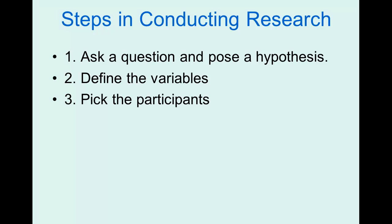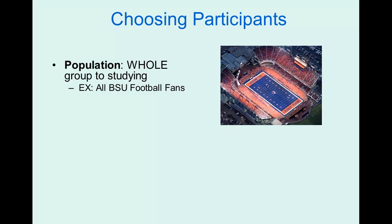Once we've defined our variables, we next need to pick the participants who are going to be in our study. Generally, a population would be ideal — a population includes the entire group of people that you're studying. So going back to my research question about BSU football fans and the blue turf, my population would be every single football fan, not just in Boise but in the entire world. Realistically though, it's not going to work out to measure all of those people.